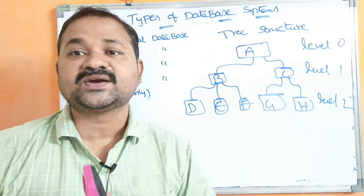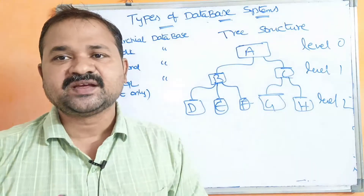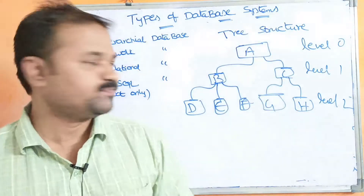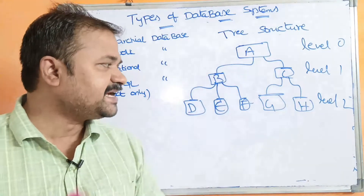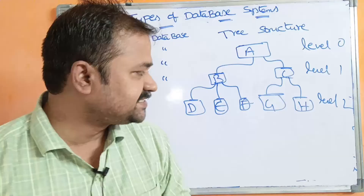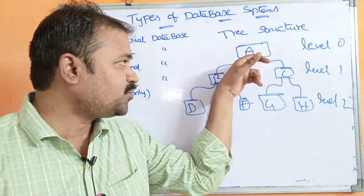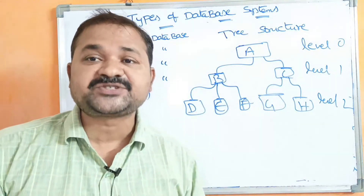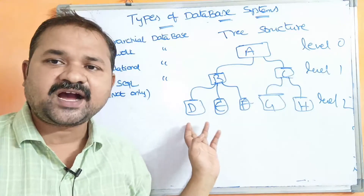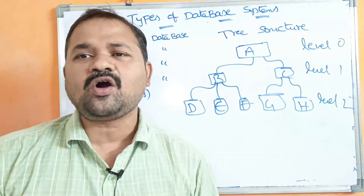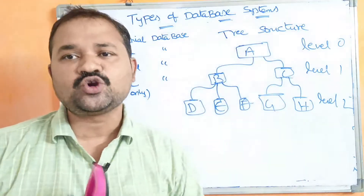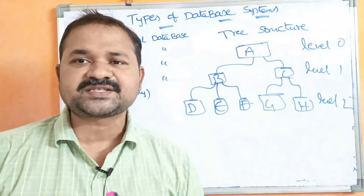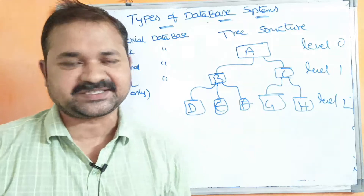The first node is always called the root node, so root node is A. The children of A are B and C, so B and C's parent is A. The children of B are D, E, F, and the children of C are G and H. In node A, record 1 is stored; in node B, record 2 is stored; and so on — all records are stored in corresponding nodes, forming parent-child relationships.